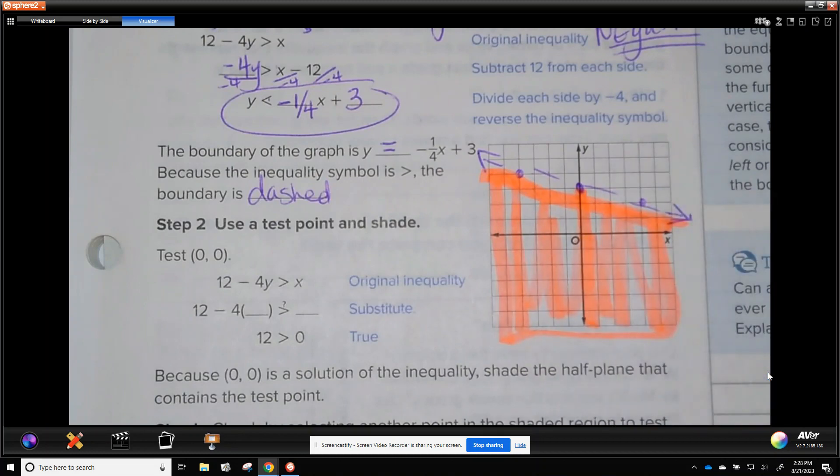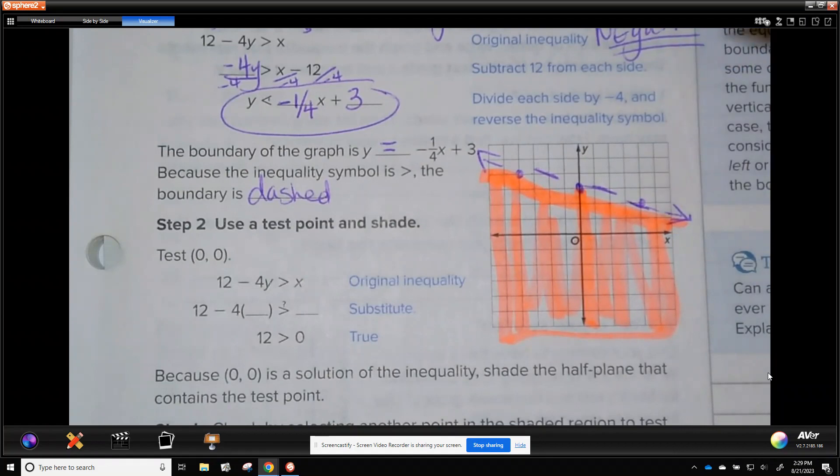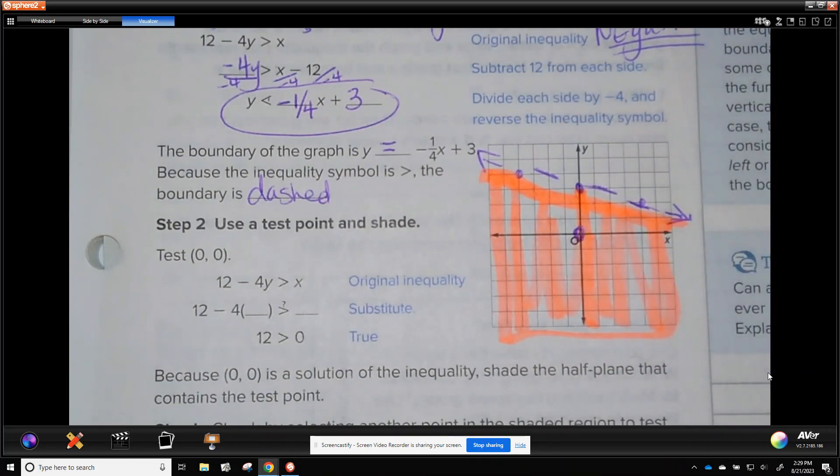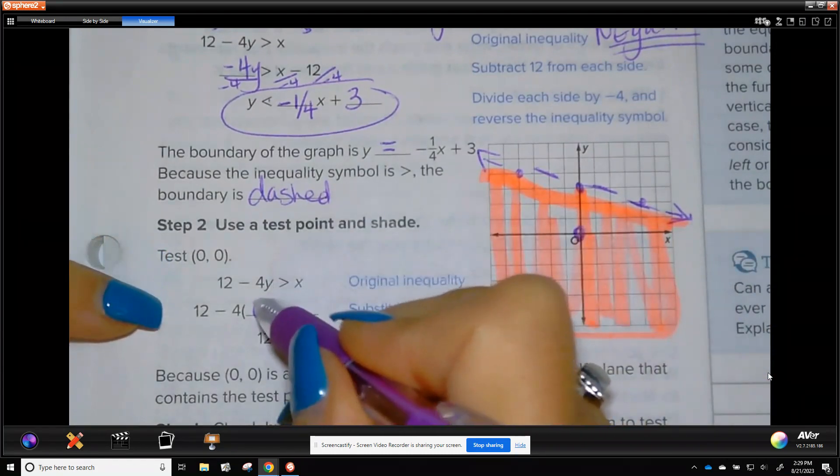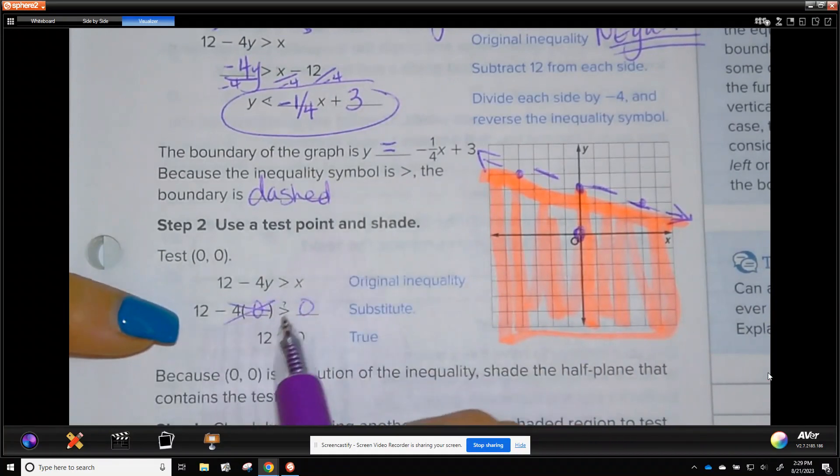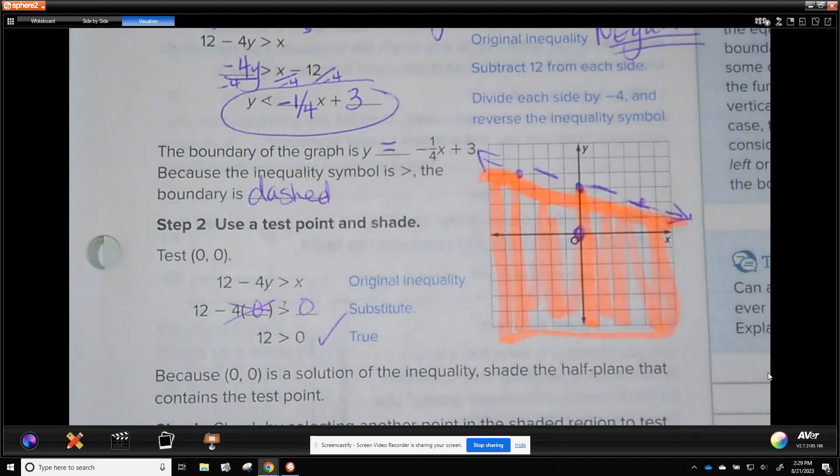So that means any number, trying to get as close as I can without going over. Any number in this shaded area is good. It should satisfy that original inequality. Any number on the dashed line should not satisfy. It is not part of the solution. But any number in here. So since 0, 0, the origin, is in our solution, if you plug in 0, 0 to test it, so that gives me 4 times 0 is greater than 0. 0 just makes that go away. 12 greater than 0, yes. And that is true in our shaded area is, does contain 0, 0. So that's good.